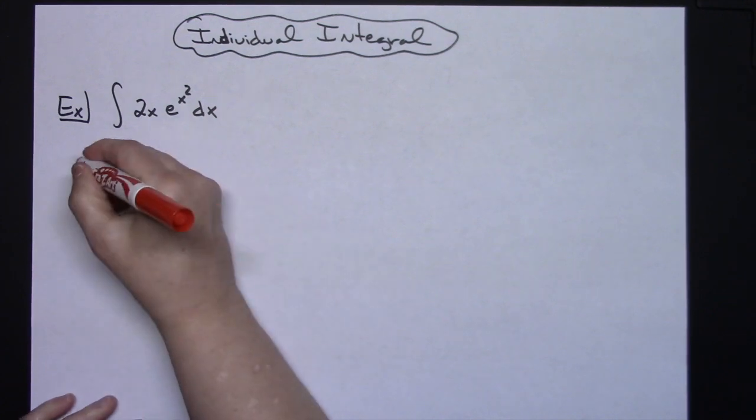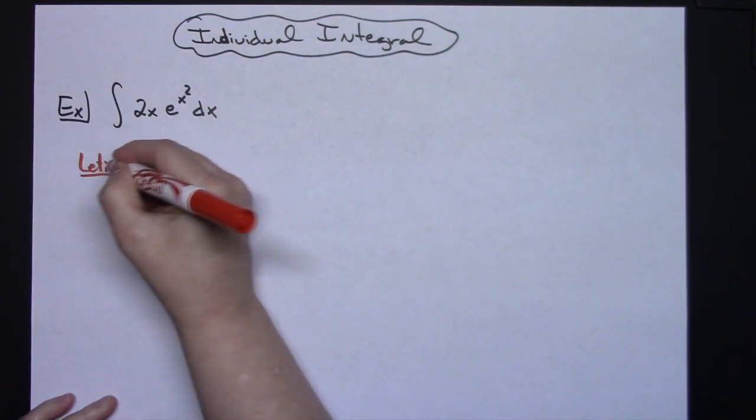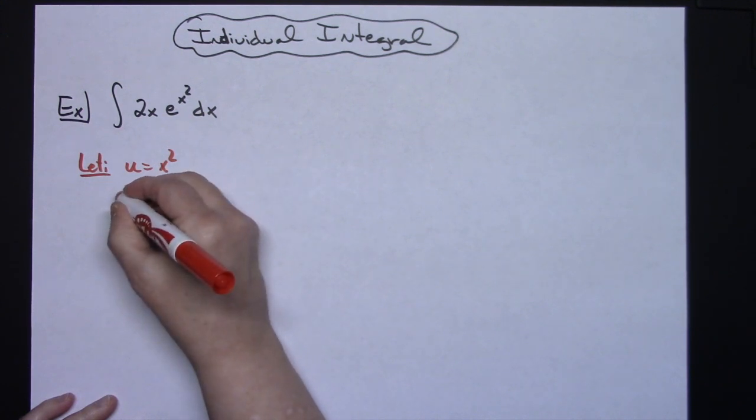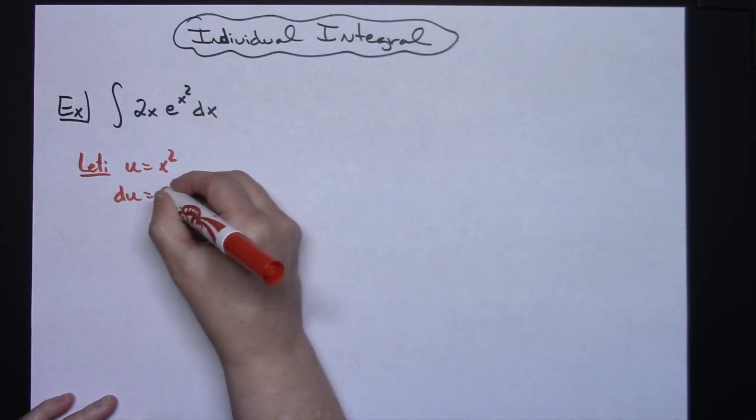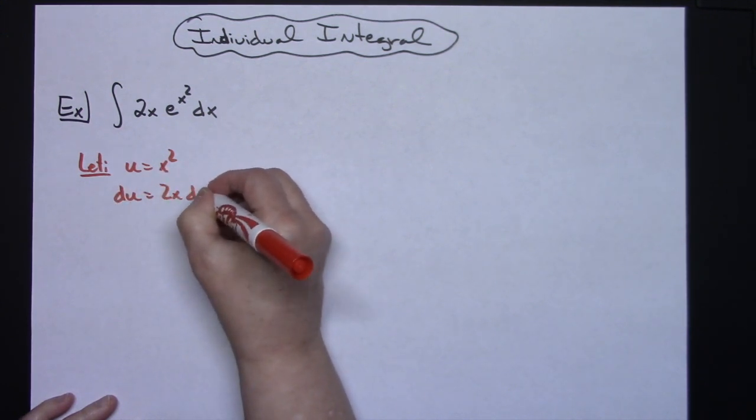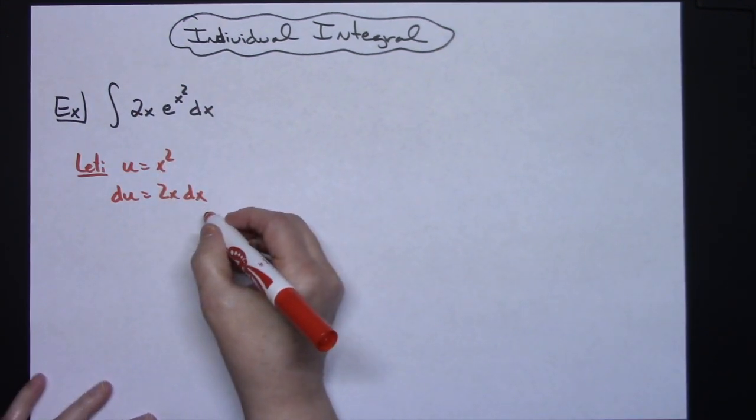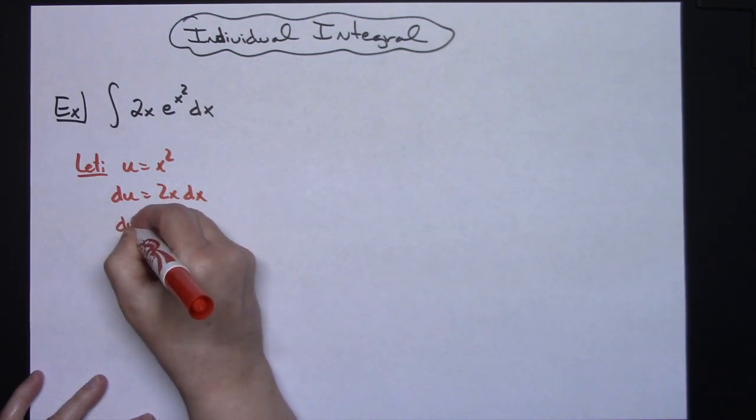I'm going to start with letting u equal to that x squared. When you take the derivative of both sides, du is equal to 2x dx. So there's the 2x that you see that's going to cross out. I'm going to go ahead and solve all the way down for dx, so I have du over 2x is equal to dx.